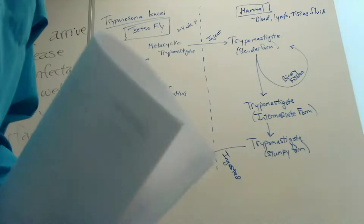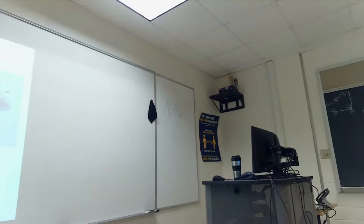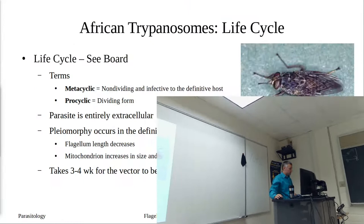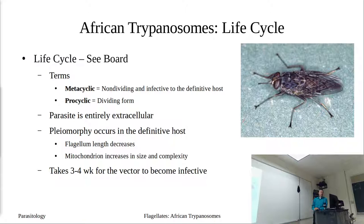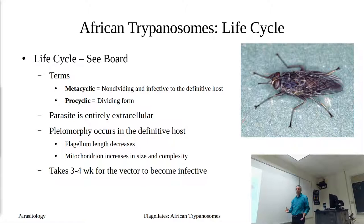We introduced some additional terms: metacyclic — the infective, non-dividing stage infective to the vertebrate host — and procyclic — the dividing stage in the invertebrate host. Pleomorphia occurs in the definitive host: we have the slender form replicating, then transition to a stumpy form that's infective to the insect. The flagellum is decreasing in length — the slender form has a long flagella, the stumpy form a much shorter one. The second change is the mitochondrion increasing in size.